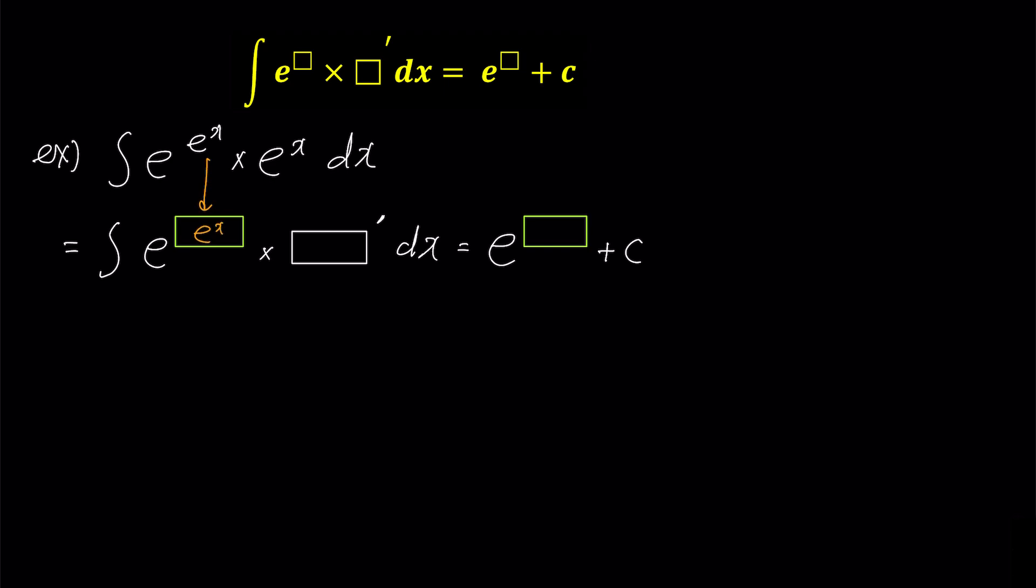We put e to the power of x in the box, and its derivative e to the power of x in the box prime, and that's all. Now, we just put e to the power of x in the box on the right. We can find the answer in one line.